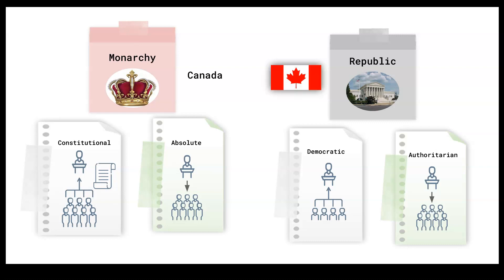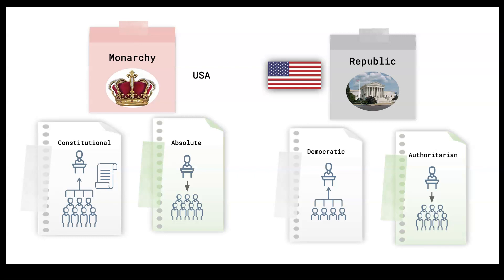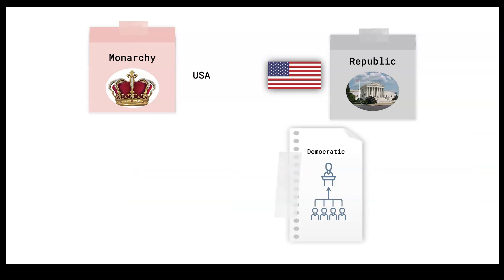Canada would be an example of a constitutional monarchy, with a queen represented by the governor general as head of state, and the people get to choose a prime minister. Therefore it is a constitutional monarchy — democratic with a monarch as head of state. The United States is not a monarchy; they are a republic where the president as head of state is chosen at regular intervals by the people, making it a democratic republic.